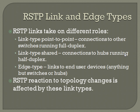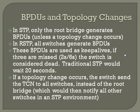RSTP's reaction to topology changes is affected by these link types. In STP, only the root bridge generates BPDUs unless a topology change occurs, but in RSTP all switches generate BPDUs. These BPDUs are used as keep-alives — if three are missed, at two seconds each, that's six seconds total before a switch is considered dead, compared to the 20-second wait in traditional STP, saving 14 seconds. If a topology change occurs, the switch sends the topology change notification to all switches directly, rather than relaying through the root bridge as STP required.